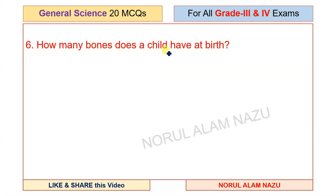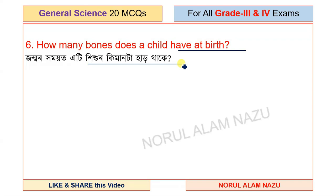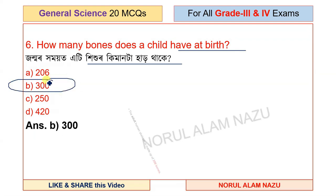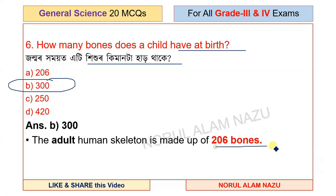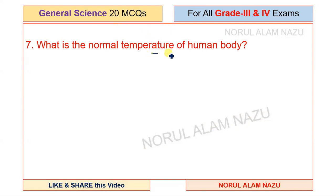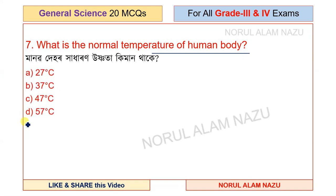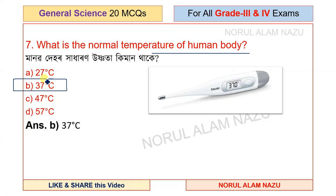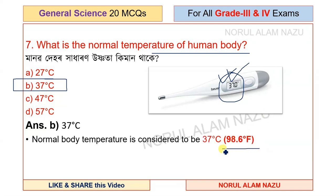How many bones does a child have at birth? The adult human skeleton is made up of 206 bones. The normal temperature of the human body is 37 degrees Celsius, or 98.6 degrees Fahrenheit.